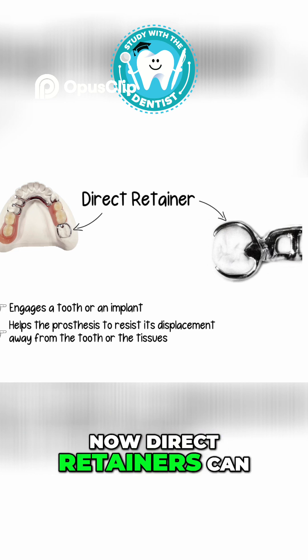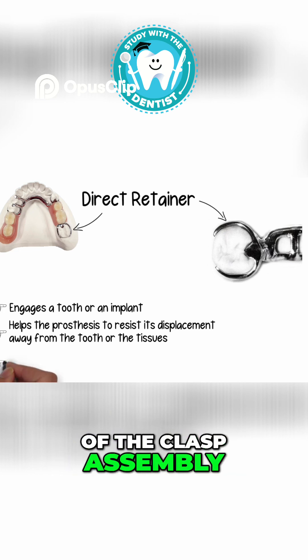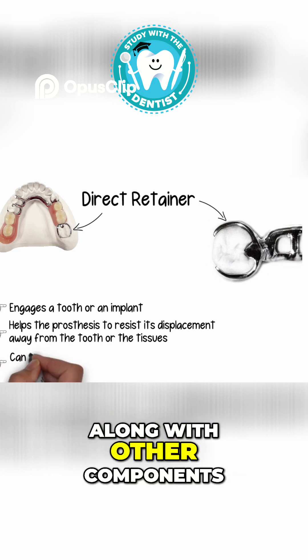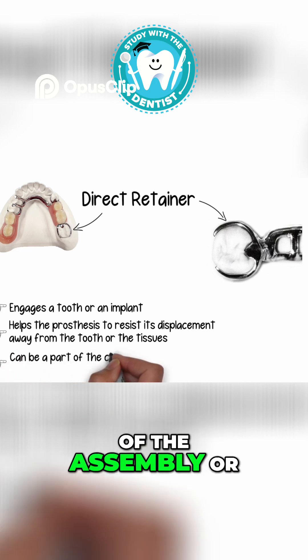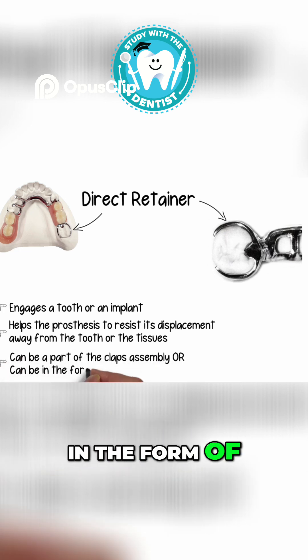Now direct retainers can either be a part of the clasp assembly along with other components of the assembly, or they can be in the form of an attachment.